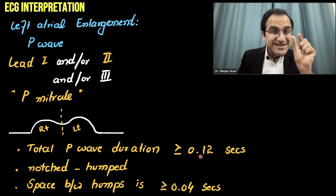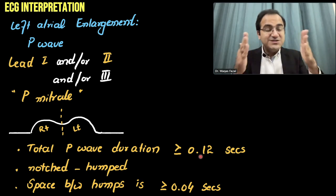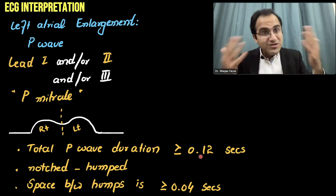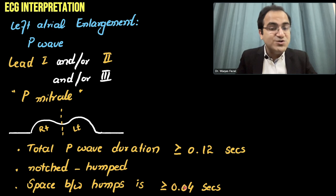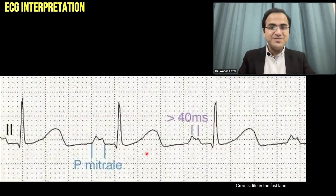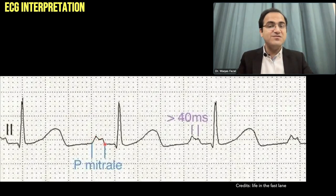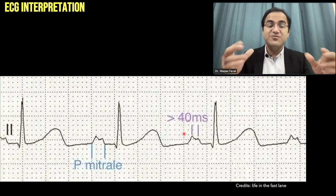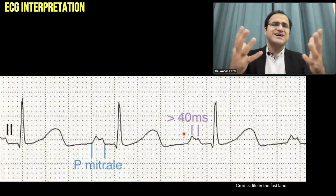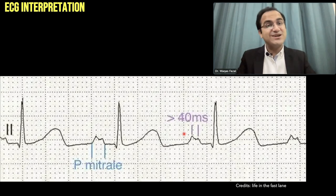0.12 seconds is equal to 3 small boxes, so the P wave will be 3 small boxes wide or more. It will be a notched or humped P wave, with space between the two humps equal to or greater than 0.04 seconds — one small box. This ECG shows P mitrale. Look at the double humps of the P wave — it is 3 small boxes wide. That is a wide P mitrale with a notched or humped P wave, which is a classical presentation of left atrial enlargement on ECG.